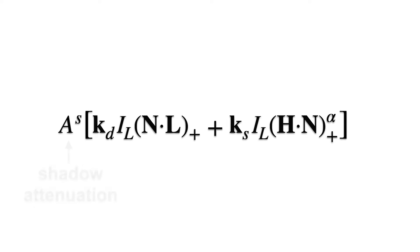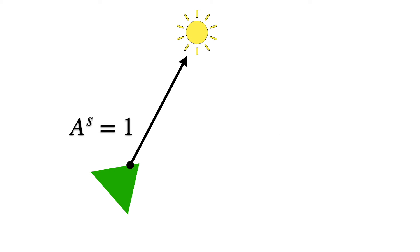Now let's add in a shadow attenuation term. When the point is directly illuminated by the light source, the attenuation factor is 1, meaning no light is lost. When it's blocked, we set it to 0.